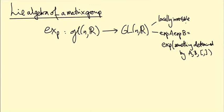It's a locally invertible map, which means that there's a neighborhood U of the zero matrix in little GL(n) and a neighborhood V of the identity matrix in big GL(n), and an inverse going back from V to U for the exponential map.